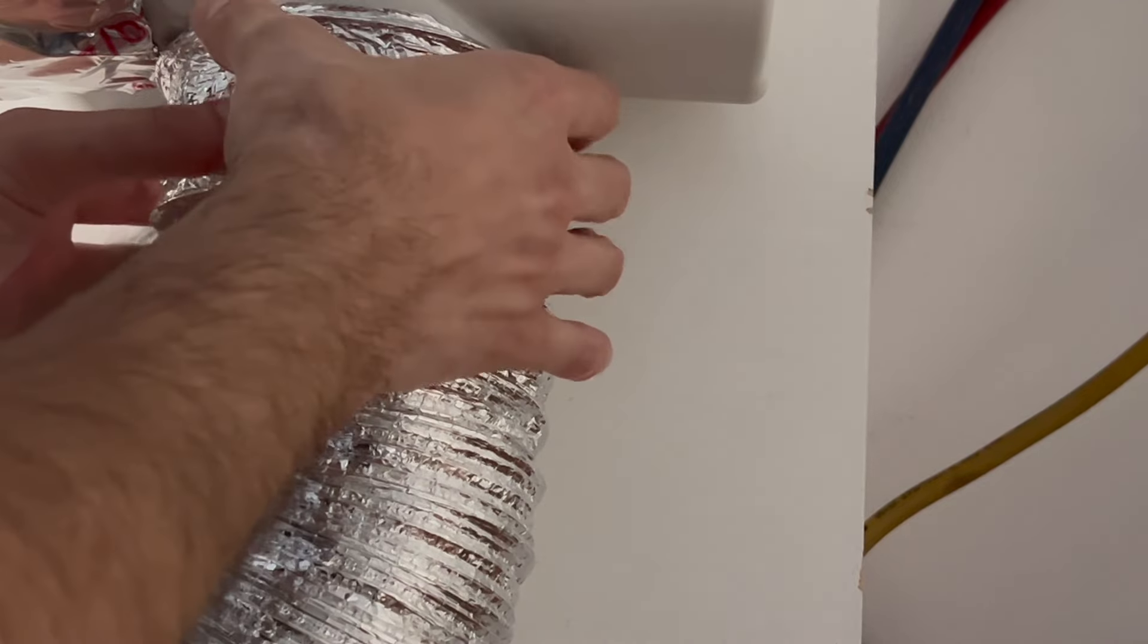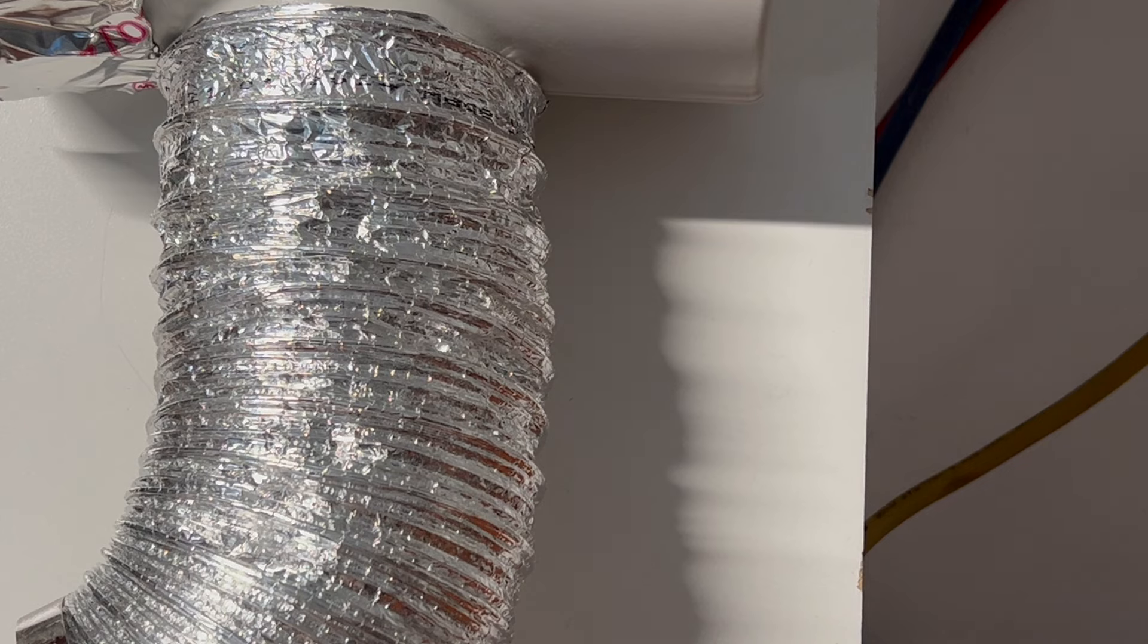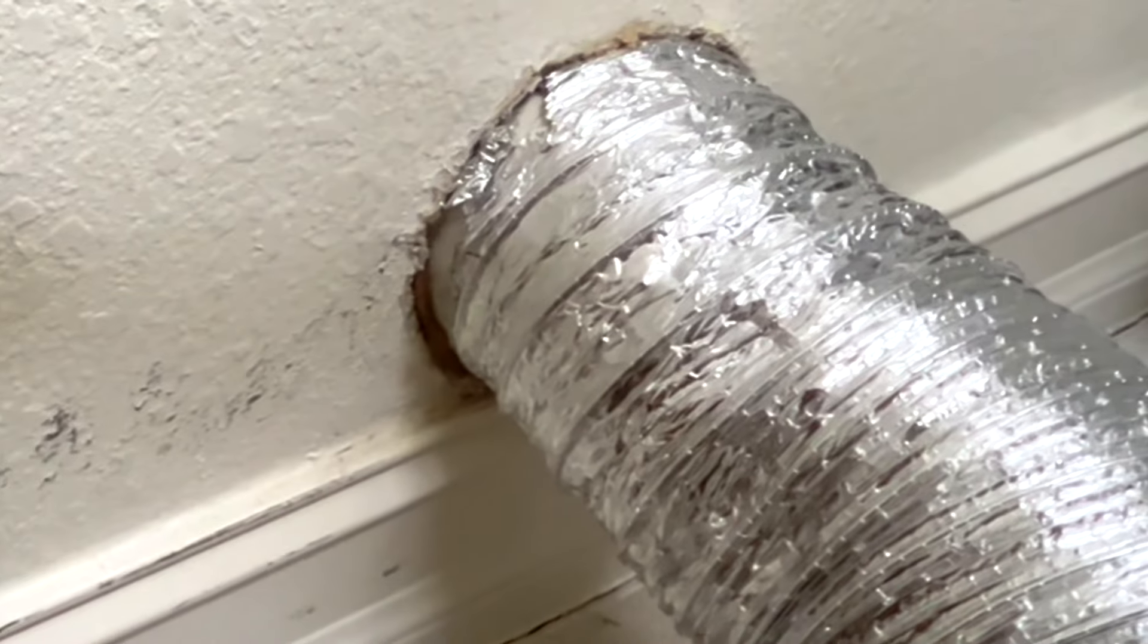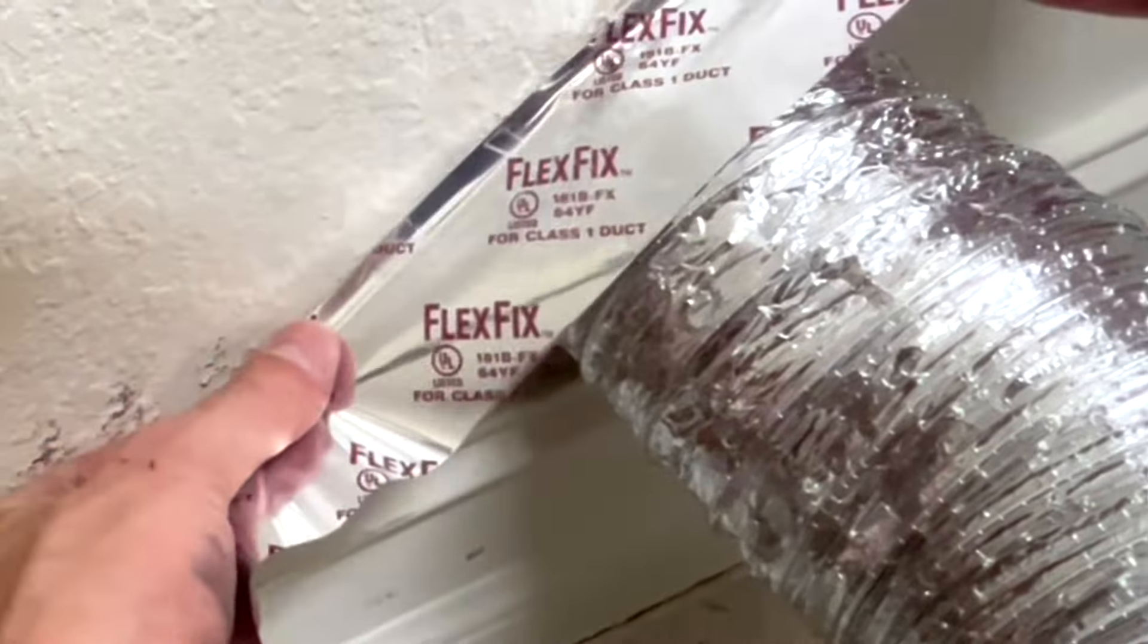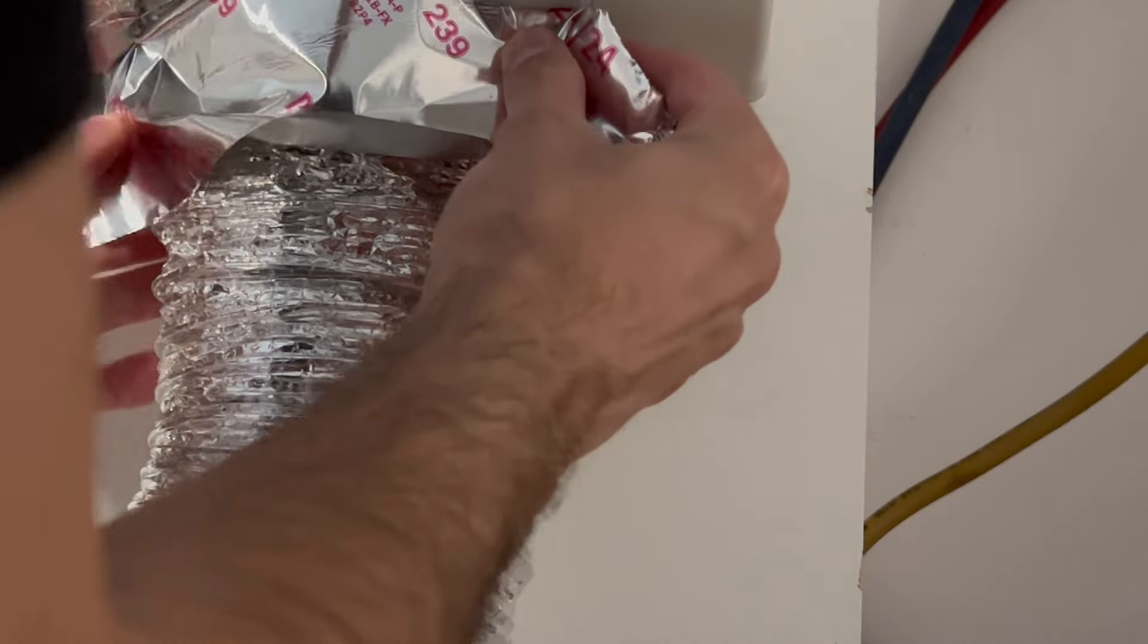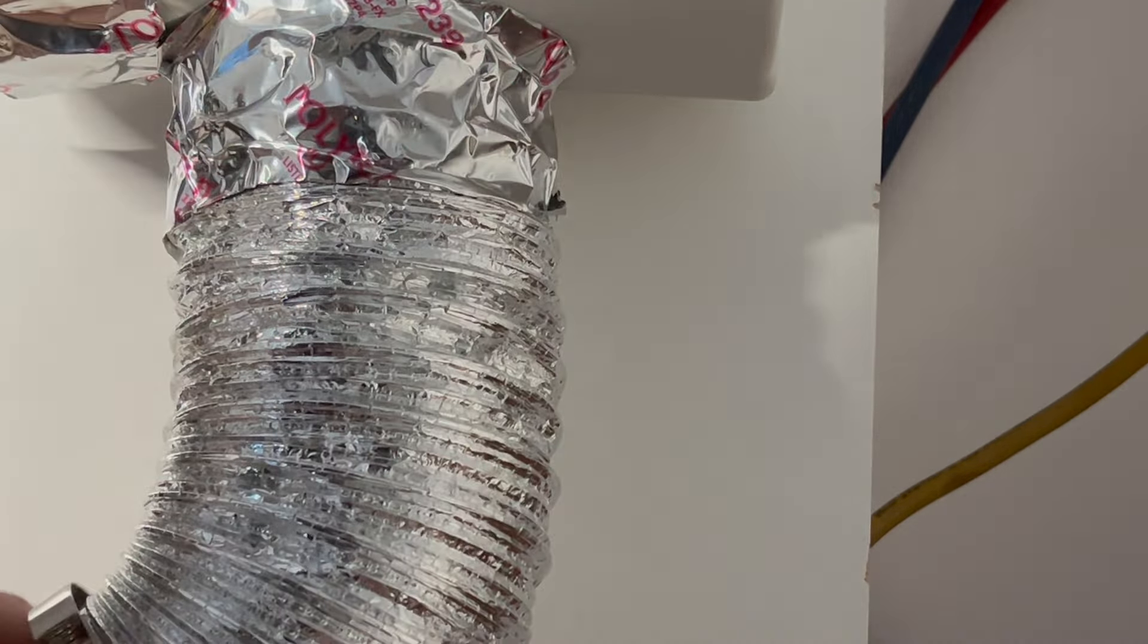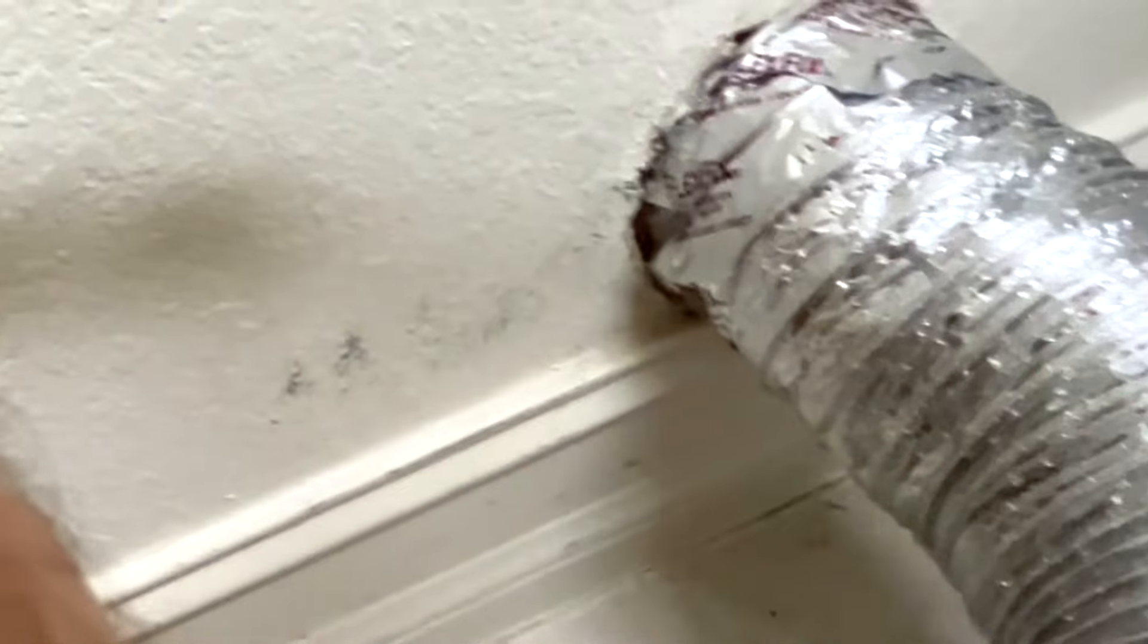Now it is on there good. You want to leave a little bit of the actual metal vent that you're attaching it to exposed so we could connect some tape and get it to stick nicely. My trick is to take silver tape, and you should definitely be using silver tape if you install this. Do not use duct tape. Now before we put the clamp on, we are going to wrap the silver tape around it.